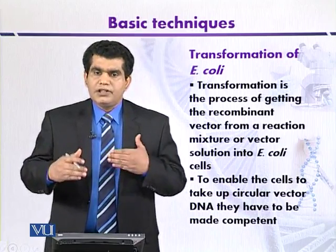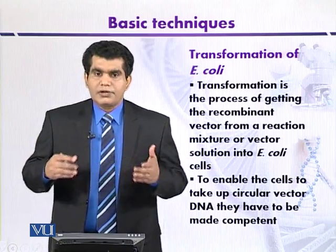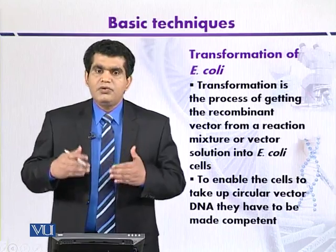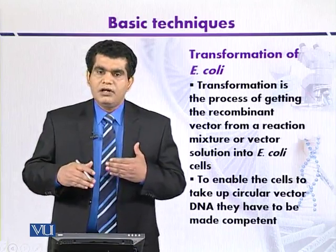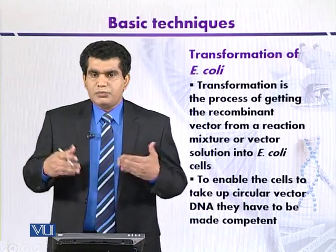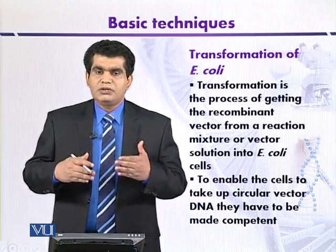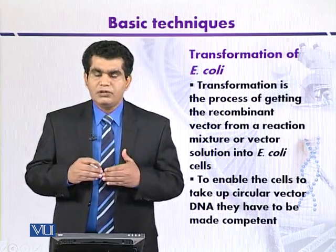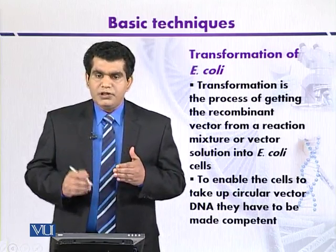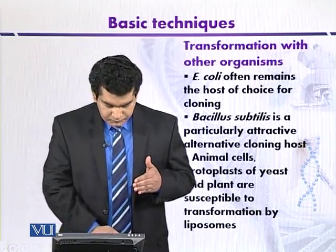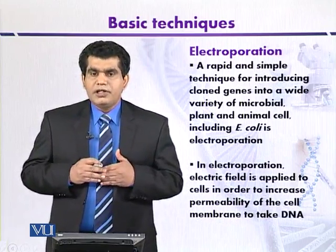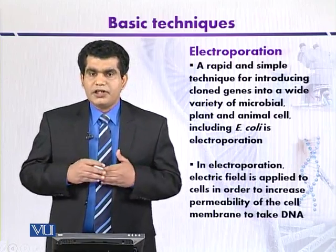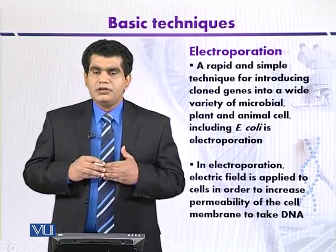This is one of the chemical methods that can be used to transform host organisms like E. coli. Some other techniques are also available, like electroporation, by which we can transform animal cells, plant cells, and even bacterial cells like E. coli. Electroporation is a technique in which cells are subjected to an electric pulse that results in the temporary cracking of the cell wall, so that even larger DNA molecules can also be absorbed by the cell. Electroporation has relatively high transformation efficiency compared to the chemical method, and one advantage is that even larger DNA fragments can be introduced into the host organism.